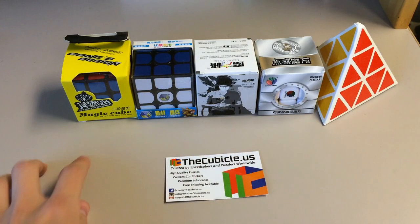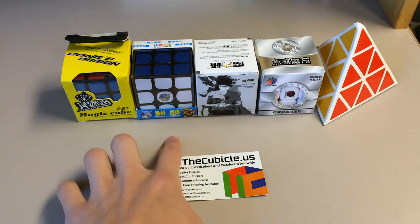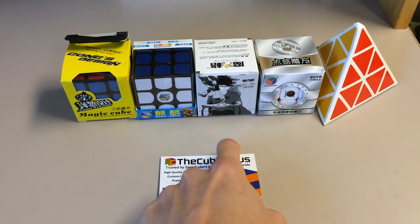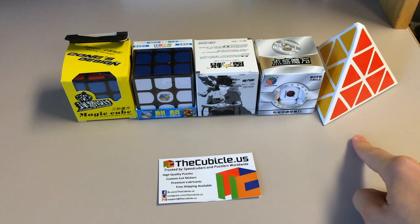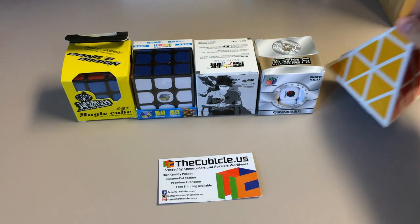The cubes from left to right are the Kong's Design Yu Yang, the Yushin 3x3, the QiYi Bullfight, the 55mm Diancheng 3x3, and I'm not quite sure of the brand of this. This is a Gear Pyraminx.